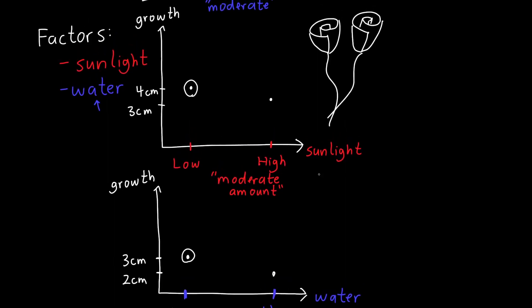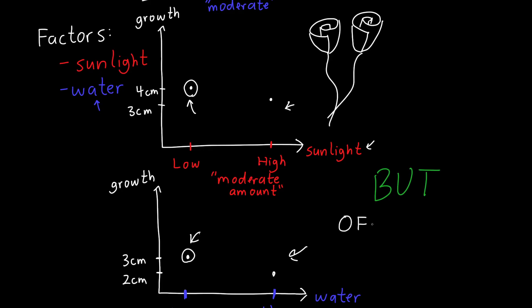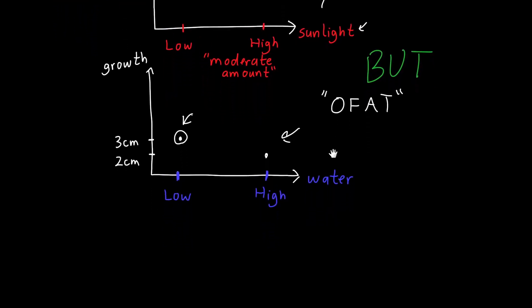Taking these two experiments together, it looks like the best growing conditions are a low amount of sunlight and a low amount of water. But you might ask — the effect of sunlight probably depends on the amount of water we give our rose bush. Maybe we can have too much sunlight if there's not enough water, but a high amount of sunlight combined with a high amount of water might actually be good for the plant. These experiments wouldn't have figured that out, because here we just varied the water and here we just varied the sunlight. These are called one-factor-at-a-time or OFAT experiments — the traditional way of doing science: isolate one variable at a time, sweep it, and see what effect it has.